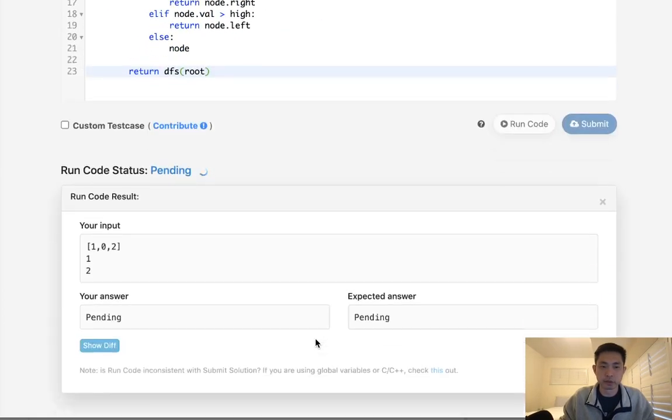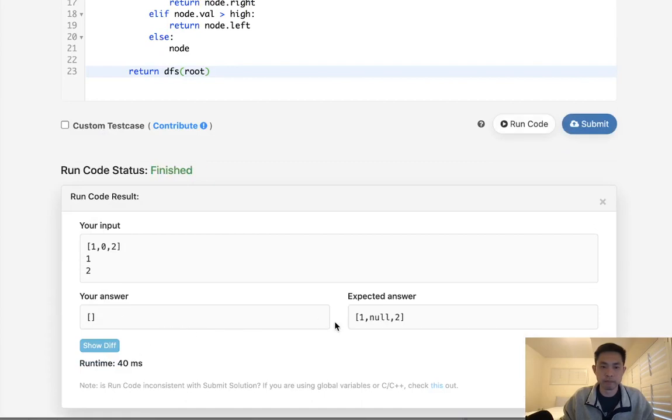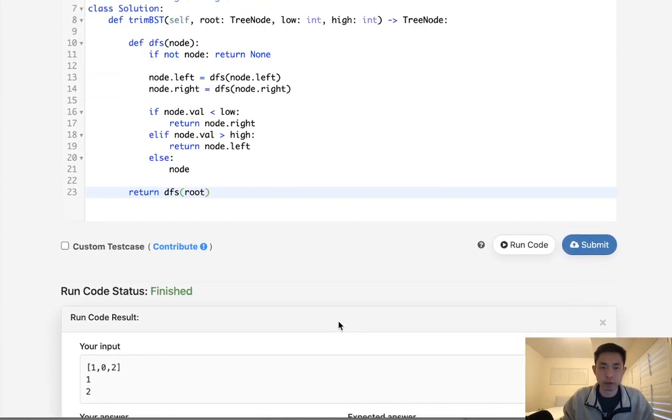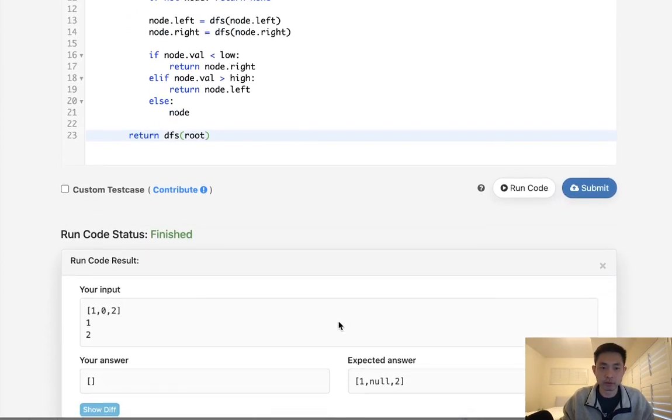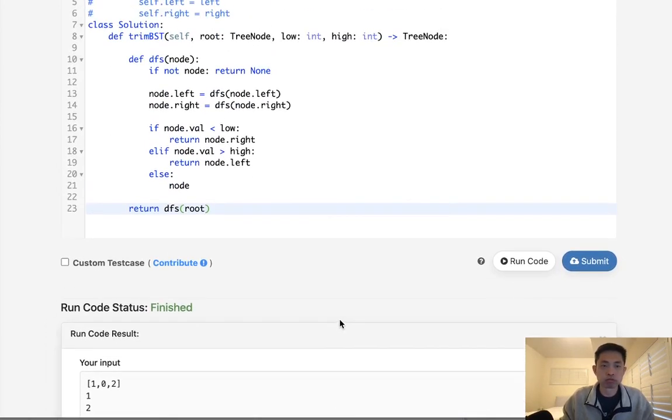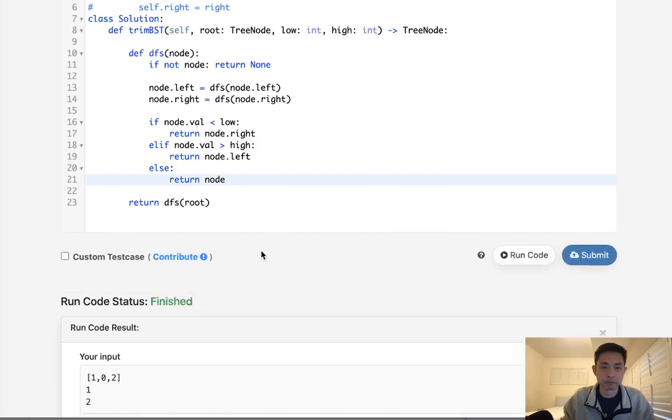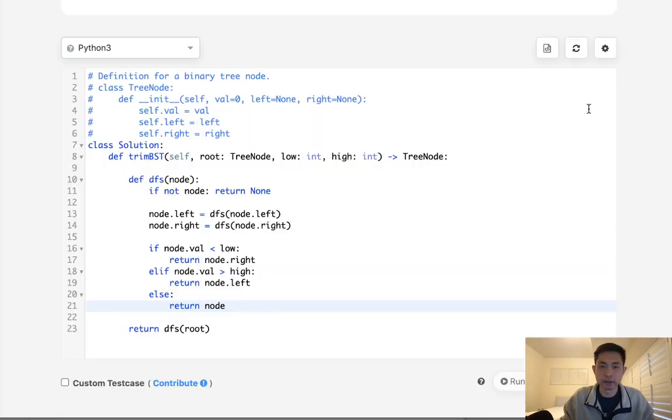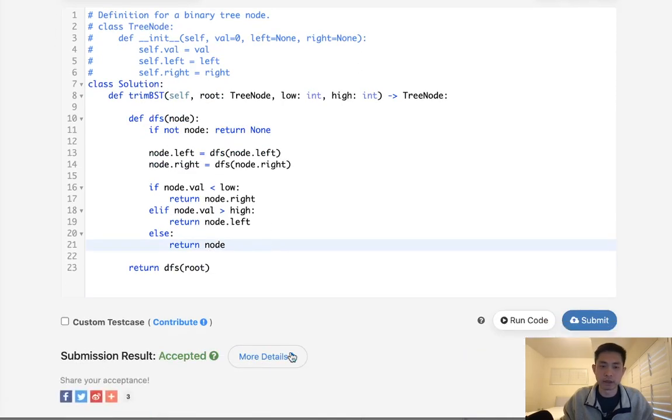Let's make sure this works. Okay, that didn't work. Let's see. Return to a stop root. Oh, right. I have to return the node. Silly me. Okay, so that looks like it's working. Let's go ahead and submit it. And there we go. Accepted.